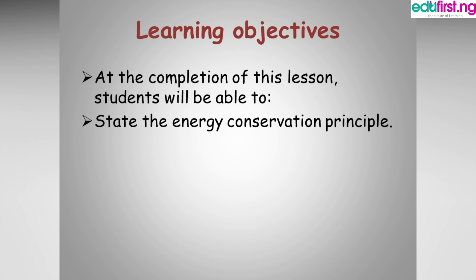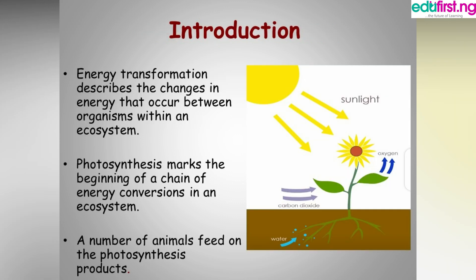Introducing the topic: energy transformation describes the changes in energy that occur between organisms within an ecosystem. Also, photosynthesis marks the beginning of a chain of energy conversion in an ecosystem.